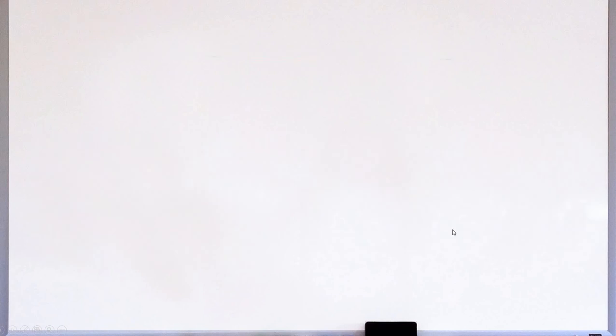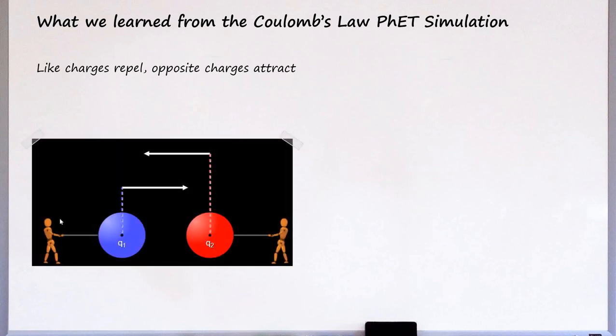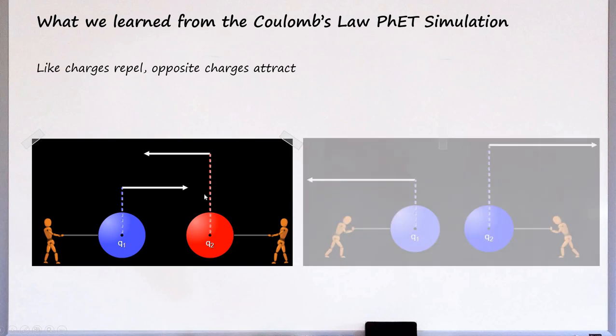So what did we learn from Coulomb's Law PhET simulation? Number one: like charges repel, opposite charges attract. But of course you already know that, but it was emphasized here that when the two charges are black and red, meaning positive and negative, that they have opposite charges and so they attract. And now here when the two charges are blue and blue, or positive and positive, they have like charges so they repel.